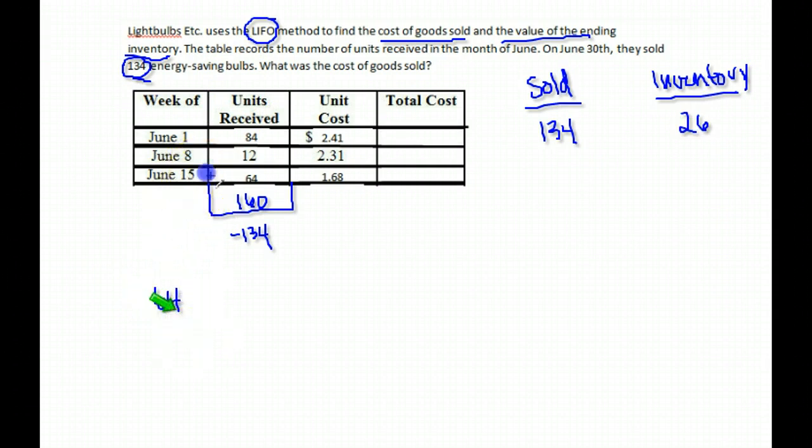So if we want the cost of goods sold, we've sold 134 items, but we do the price from the bottom up. This is Last In, First Out. So we start at the bottom this time. So as we sell our items, those 134, and we want to find where they came from, first we sell the 64 at the bottom, and that leaves us with 70. Then we sell the 12 here. And that leaves us with 58. Then we have 58 coming out of this 84.